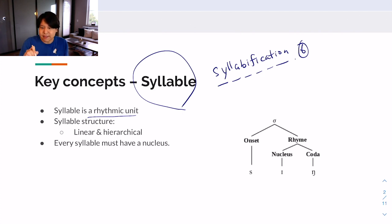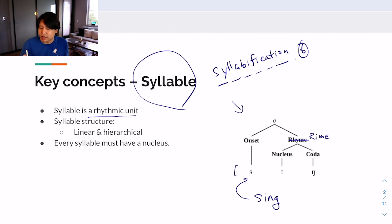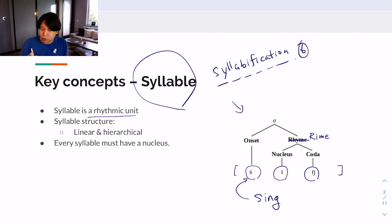Each syllable has its own structure within it. Looking at the syllable structure, I wrote 'rhyme' here, but the correct spelling should be R-I-M-E. Let's think of a word like 'sing.' If you transcribe the pronunciation of this word, it will have three segments: S, E, and N. The starting sound is S, the medial sound is E, and the sound that ends this word is N. The consonant or group of consonants that begins a word is called the onset, while the consonant or group of consonants that ends it is called the coda. Whatever is not onset or coda is called the nucleus.